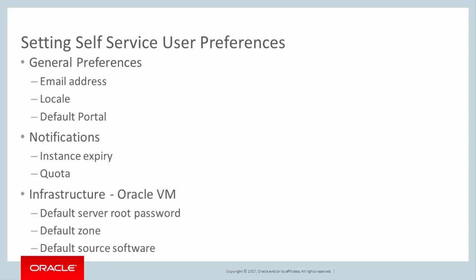The self-service user can also set default values for server deployment, including the default server root password, the default zone, and the default source software. The server root password appears preloaded when deploying a server. The default zone is that in which servers are deployed for the self-service user. The default source software is an Oracle assembly or template which is frequently used.